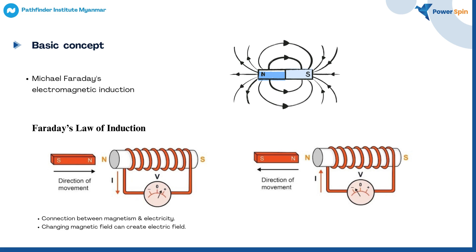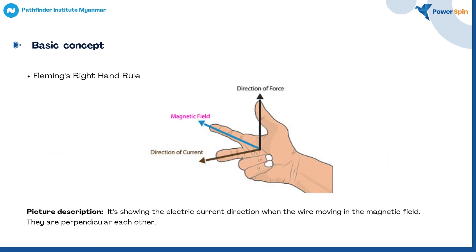Michael Faraday's basic concept is about the connection between magnetism and electricity. When we bring the magnet near the coils, we can see that the integrator is moving, which means the current is flowing. This is because of the magnetic field. When we move the magnet away from the coils, we can see that the integrator drops. Fleming's right-hand rule mainly shows the direction of the magnetic field, the direction of force, and the direction of current.